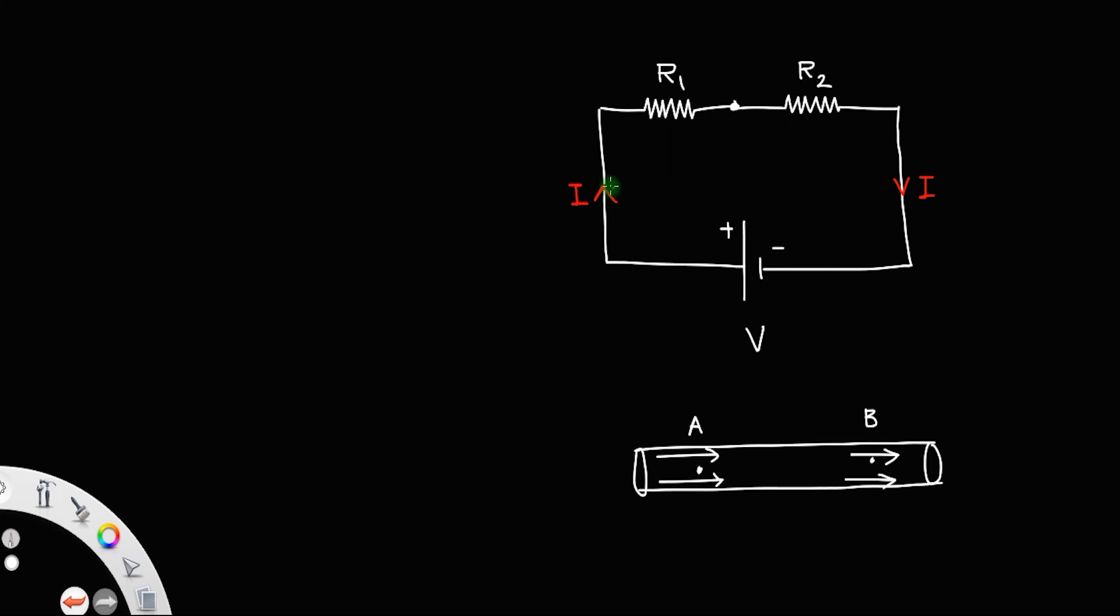So we can say that the current is just the flow of charges. The same amount of charges flow through R1 and R2. That means the current in both of these resistors remains the same.